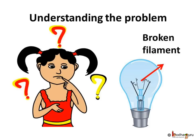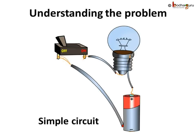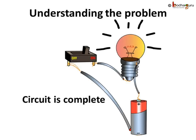But why does the broken filament not glow? Let us find it out. First, we take a working bulb and make a simple circuit using the bulb, an electric cell, and a switch. When the switch is on, the circuit is complete and the current flows. The bulb is glowing. Electricity also flows through the filament inside the bulb and the filament glows, lighting the bulb. So, it is a part of the circuit.